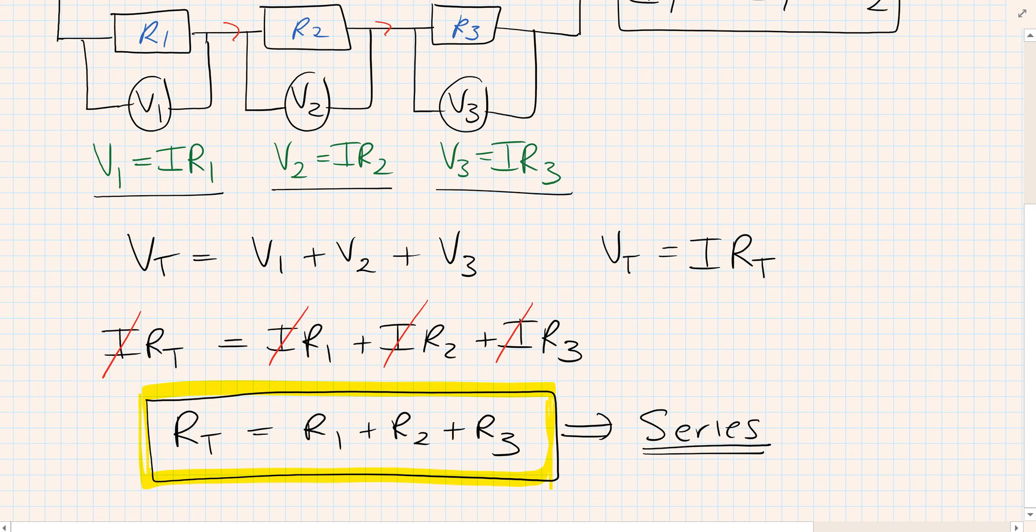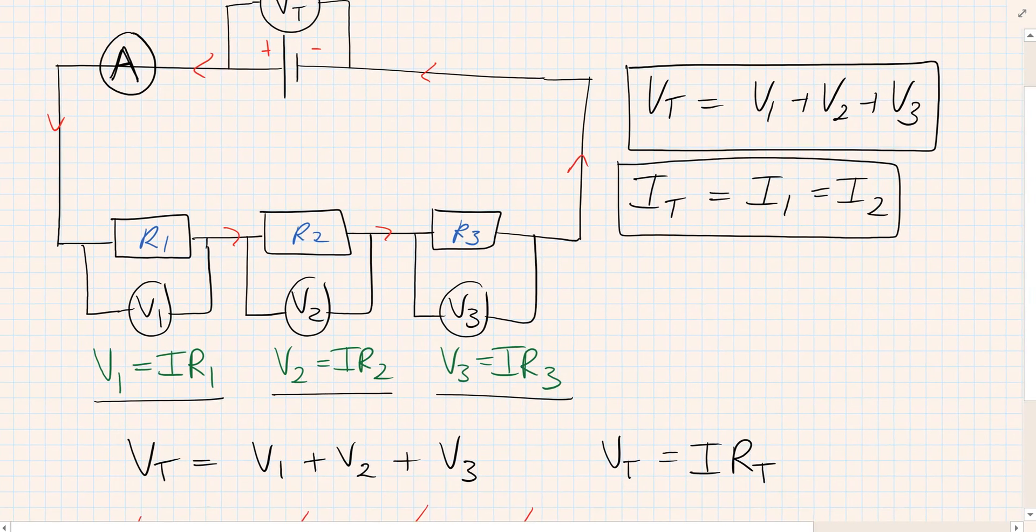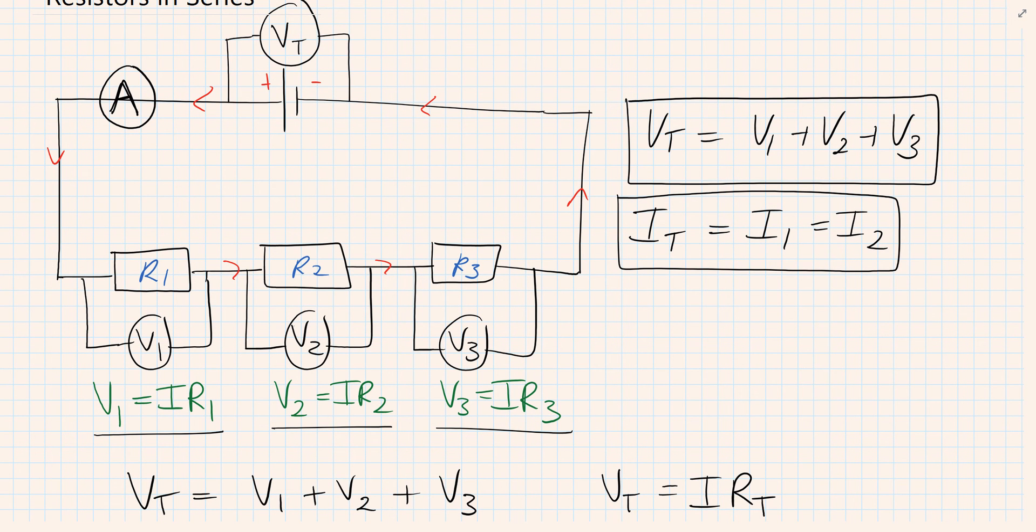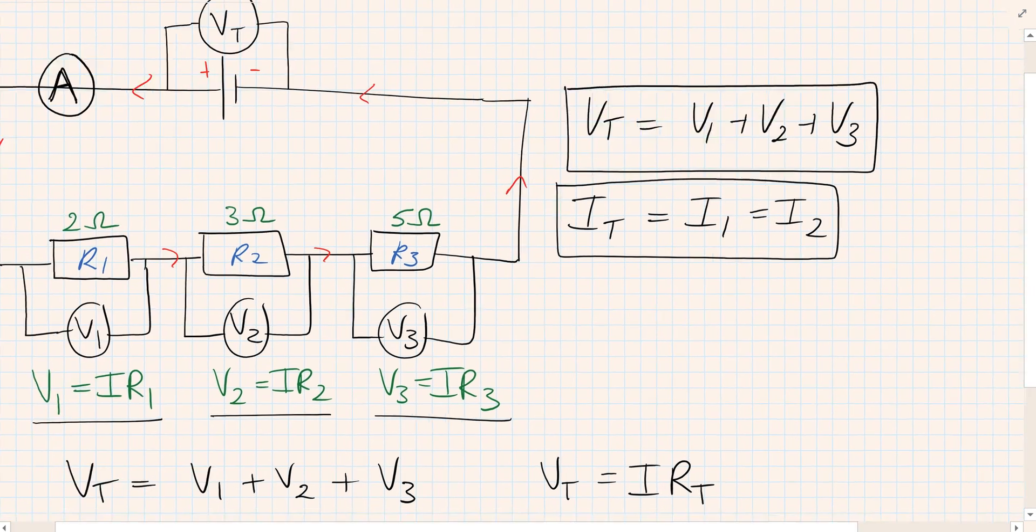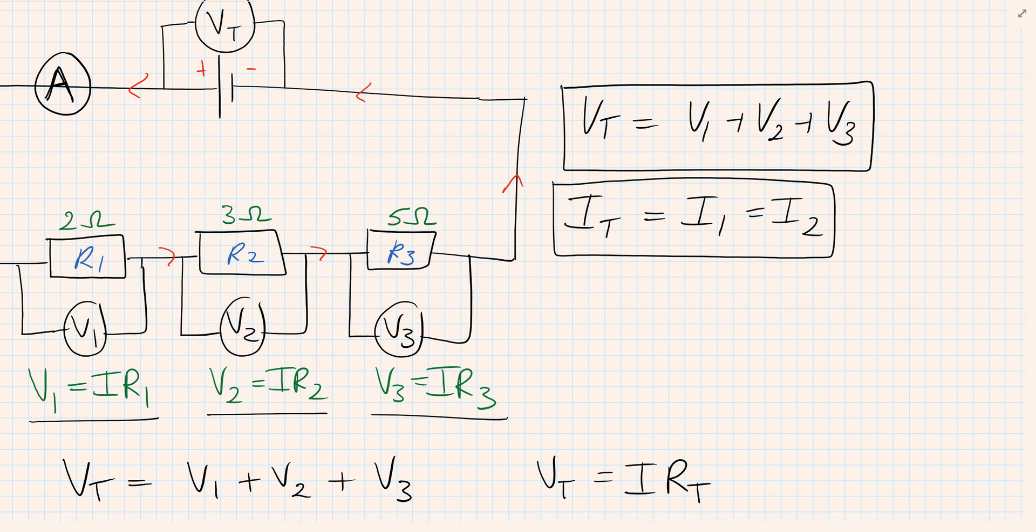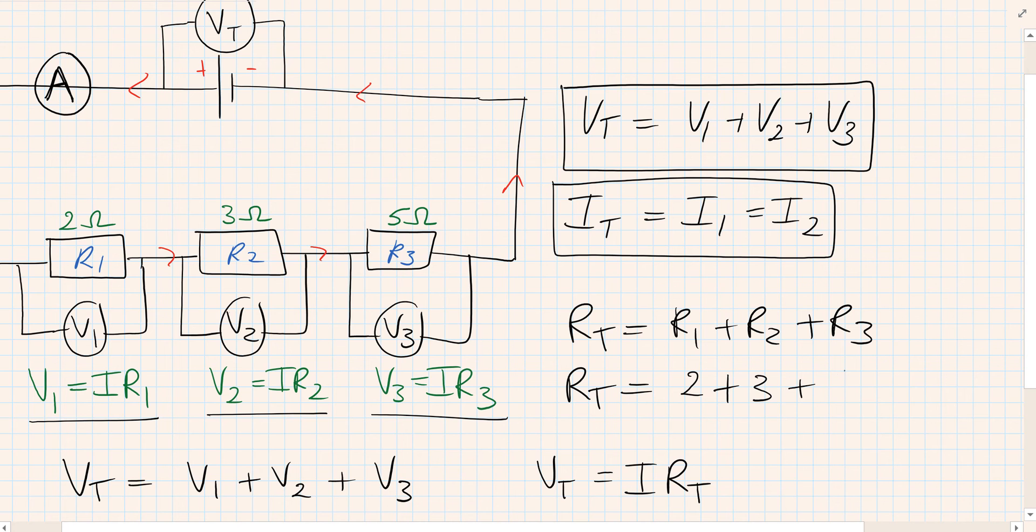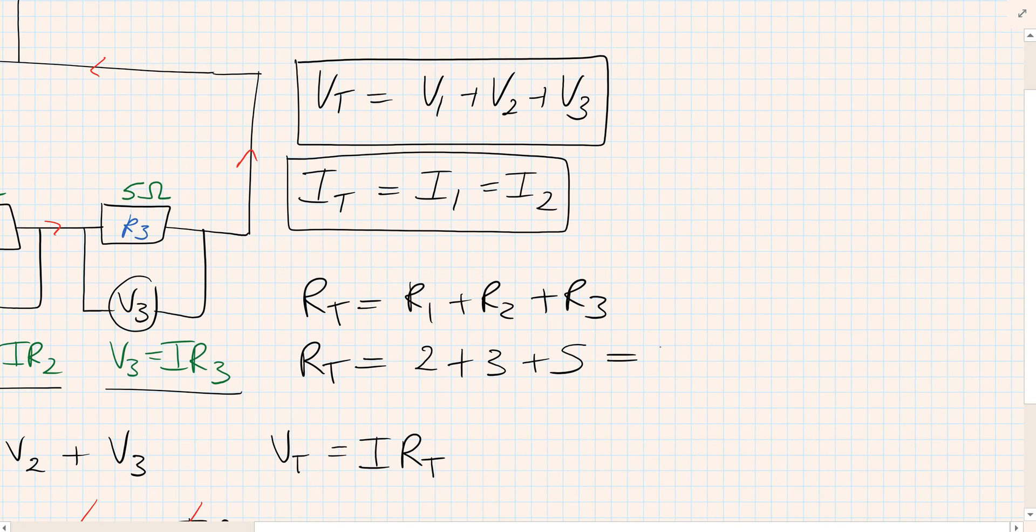Now as an example, let's say that R1 equals 2 ohms, R2 is 3 ohms, and R3 is 5 ohms. To work out the total resistance, RT would just be R1 plus R2 plus R3. So RT would be 2 plus 3 plus 5, which is 10 ohms.